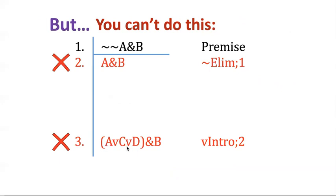Similarly, I could not apply disjunction intro to this line because my disjunct is not the main connective here. I need to have A alone in order to make this A or C or D. The disjunction here is going to be the new main connective whenever I do disjunction intro, and it's not — this is still the and main connective. So that's a misapplication of that rule.